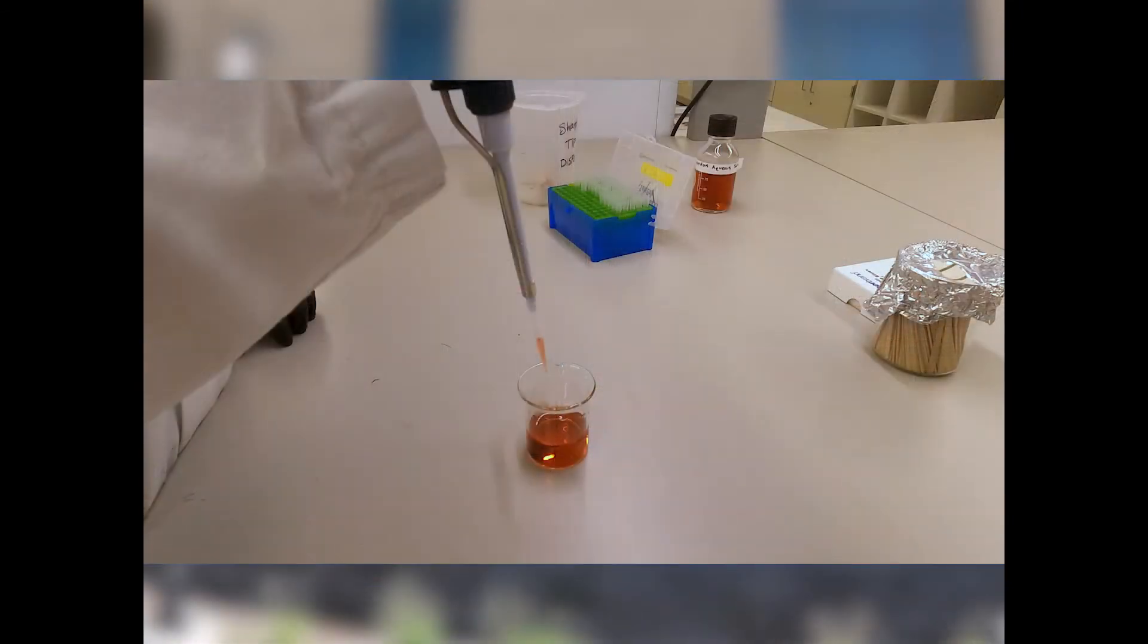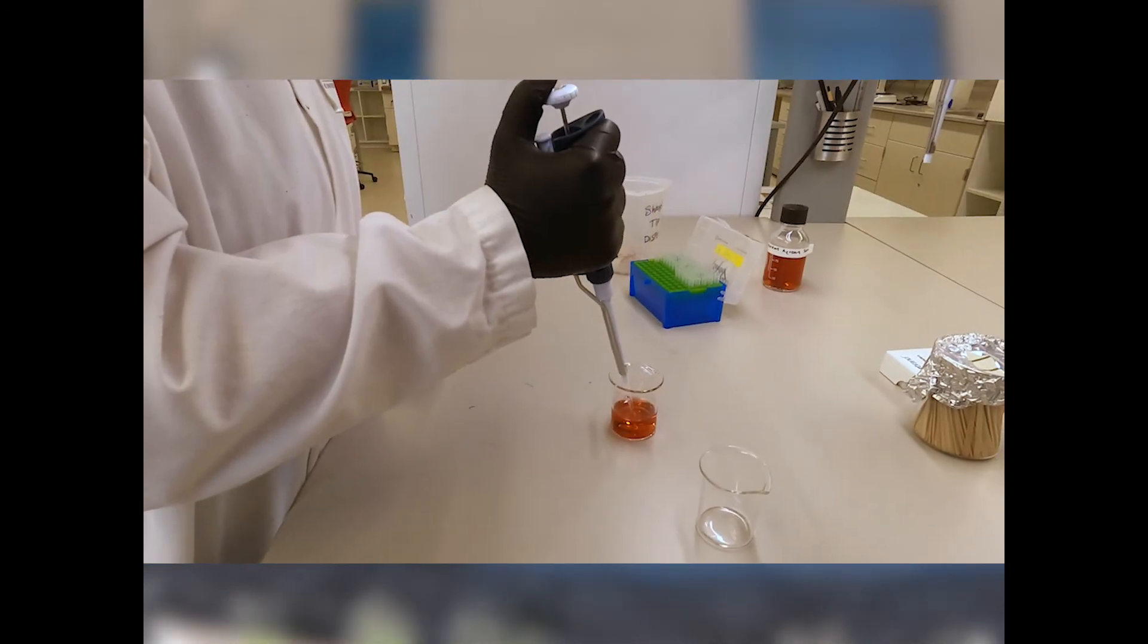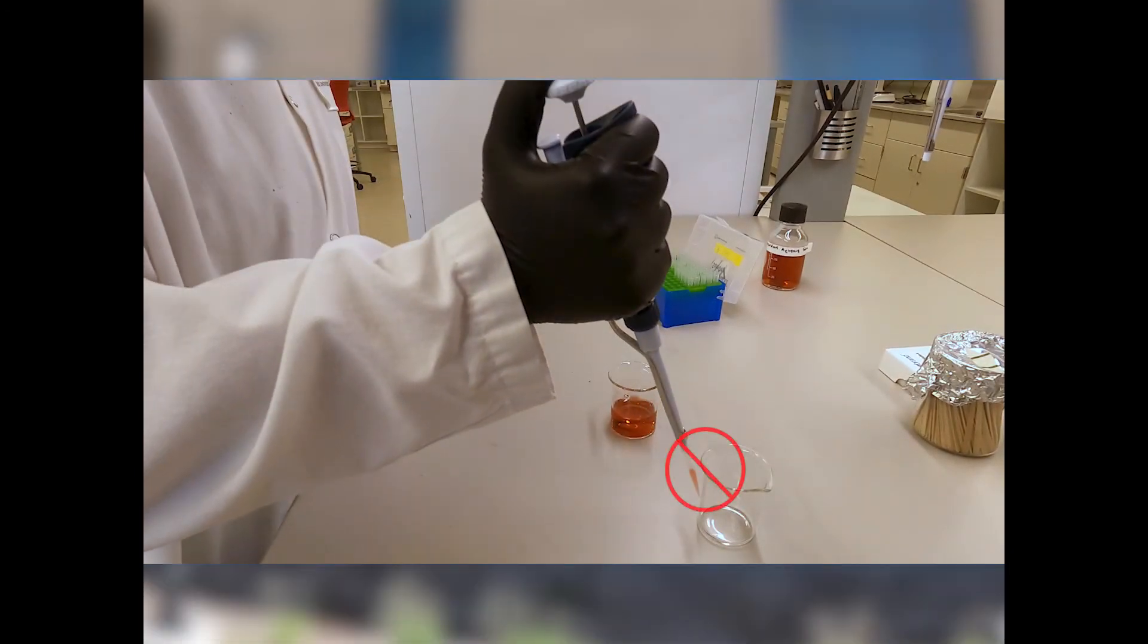When the liquid has been extracted and drawn up into the tip, check to ensure there are no bubbles that could affect the volume. Note that while moving the micropipette, it should always remain vertical with the pipette tip oriented towards the ground. This prevents liquids from entering the micropipette. Remember, do not touch the tip to any unintended surfaces to avoid possible contamination.